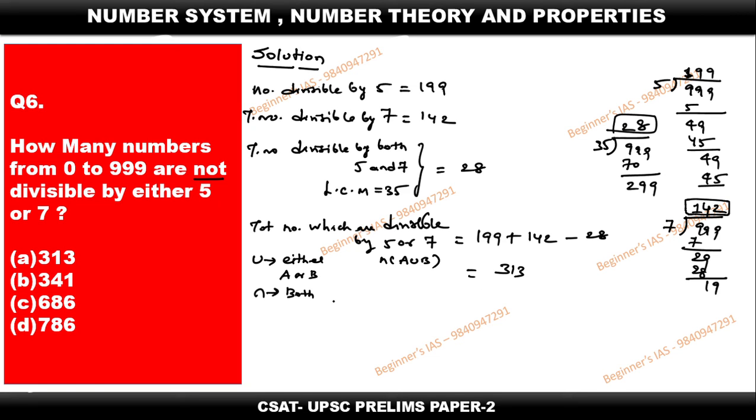But the question is not dealing with the total numbers which are divisible by. Here, it is dealing with which are not divisible by. Therefore, just check the total numbers from 0 to 999 which are not divisible by 5 or 7, which is equal to total number is 999 just minus total number which are divisible by 5 or 7, simple, therefore 313. So after subtracting this, you are getting the answer as 686.